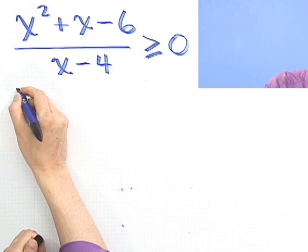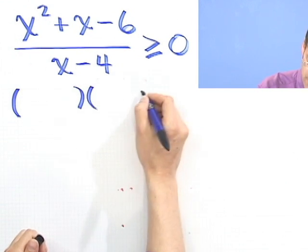Step one, make sure I've got zero on one side and everything else on the other. I've got that. Step two, make sure everything is just one fraction. Well, I have one fraction. Step three, if I see quadratics, can I factor? Well, let's hope I can. Otherwise, I'm not going to be happy.